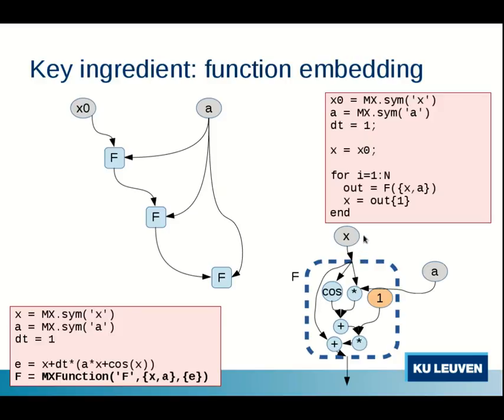In CasADi's syntax, the function can be easily constructed by making a small expression graph with local symbolic primitives. You declare the inputs here, x and a—you see the arrows x and a—and then the small expression here at the end. Then you can just call these here in the loop. The syntax as displayed on this slide may vary whether you're using MATLAB or Python, but this is basically the idea.